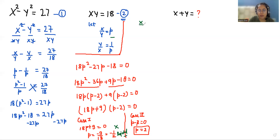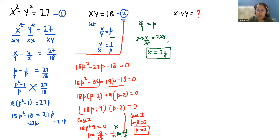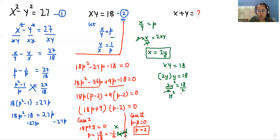Now we solve with p equals 2. Since we substituted x/y equals p, that means x/y equals 2. Multiplying both sides by y gives x equals 2y. Substituting into xy equals 18: 2y times y equals 18, so 2y squared equals 18. Dividing both sides by 2, y squared equals 9, and therefore y equals plus or minus 3.